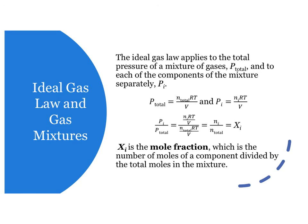The ideal gas law applies to the total pressure of a mixture of gases, P total equals N total RT over V, and to each of the components of the mixture separately, P sub I equals N sub I RT over V.